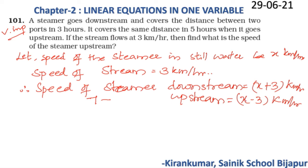To explain why: if you swim in a river in the direction of water flow, your speed increases; if you swim in the opposite direction, your speed decreases. Similarly, downstream the stream speed adds to the steamer's speed, whereas upstream it subtracts.